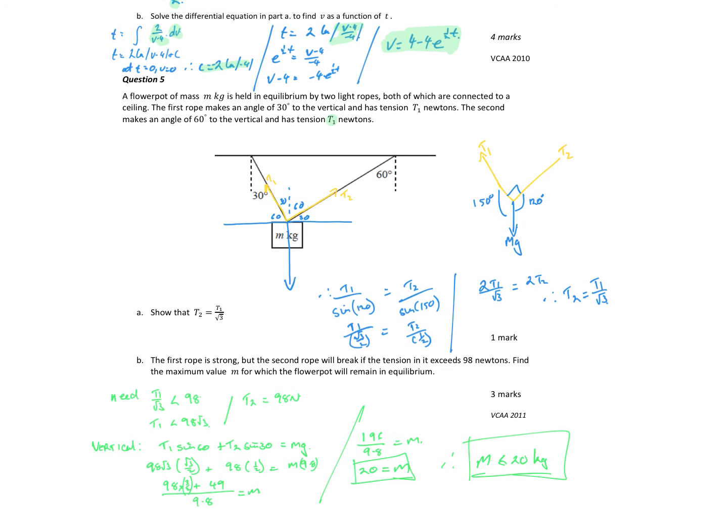Question 5: a flower pot hanging. We've got our flower pot hanging and we've got the ropes and the tensions connected. The first rope makes angle 30 degrees with tension T1, the second makes an angle of 60 degrees. It's in equilibrium so all the forces balance out to be zero. Horizontal forces have to equal zero. So T1 adjacent, T1 cos 60 is going to be equal to T2 adjacent cos 30.